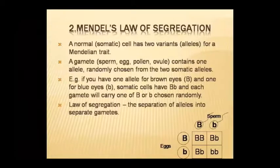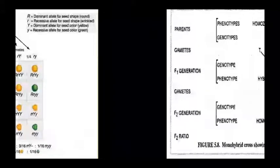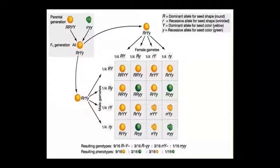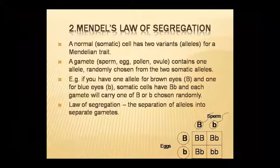Mendel's Law of Segregation is based on monohybrid cross — not dihybrid. The Law of Dominance applies to both mono and dihybrid crosses. The third law, Law of Independent Assortment, is based on dihybrid cross. In the Law of Segregation, a normal somatic cell has two variants — two alleles — for each Mendelian trait.